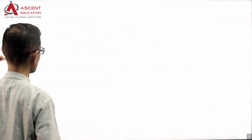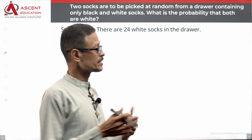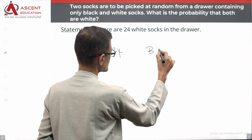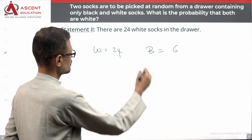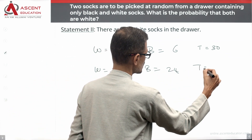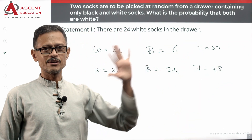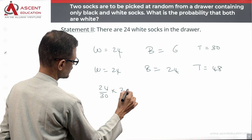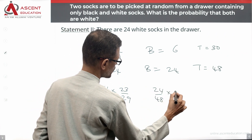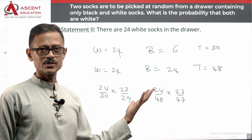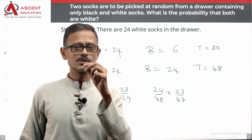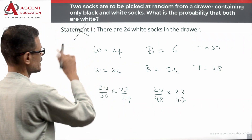Now let's evaluate statement 2: there are 24 white socks. If there are 24 white socks and say 6 black socks, the total is 30. But if there are 24 white and 24 black, the total is 48. The probability calculation gives 24/30 into 23/29 in one case, and 24/48 into 23/47 in another — obviously two different numbers. So statement 2 alone is not sufficient either; we don't have a unique answer.